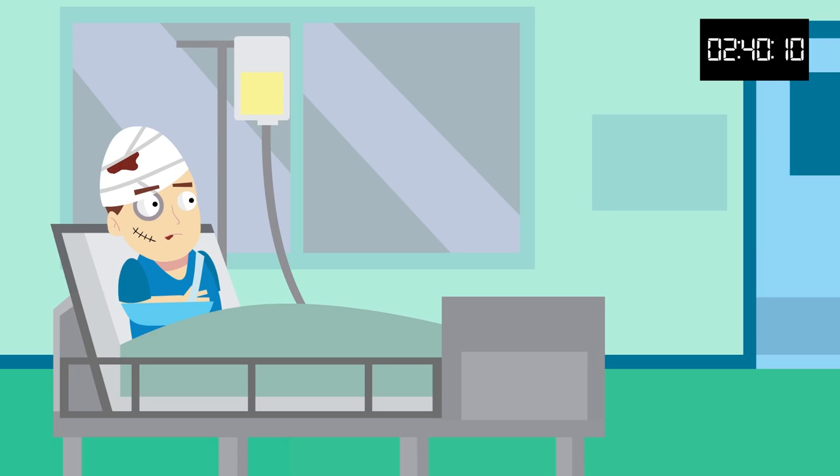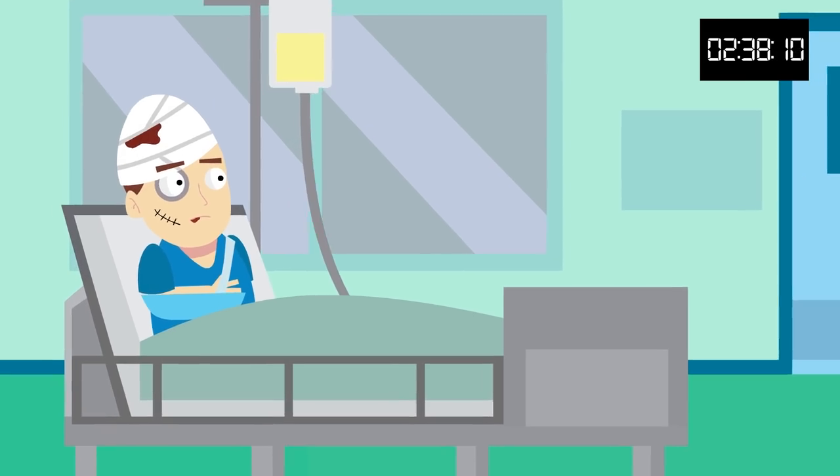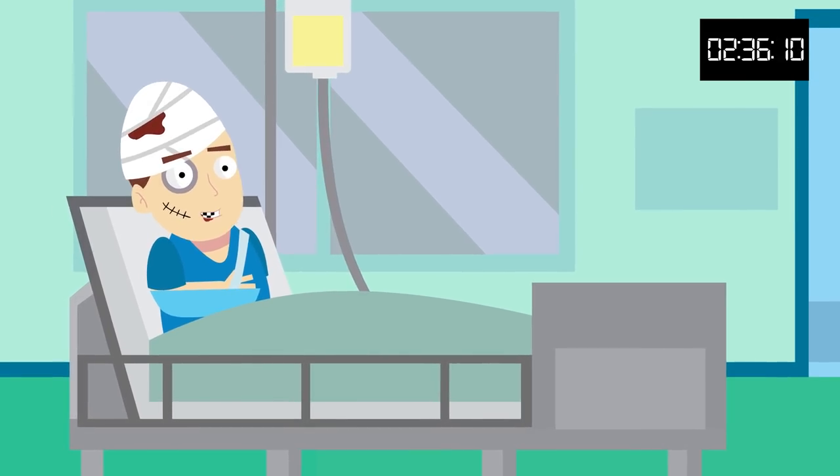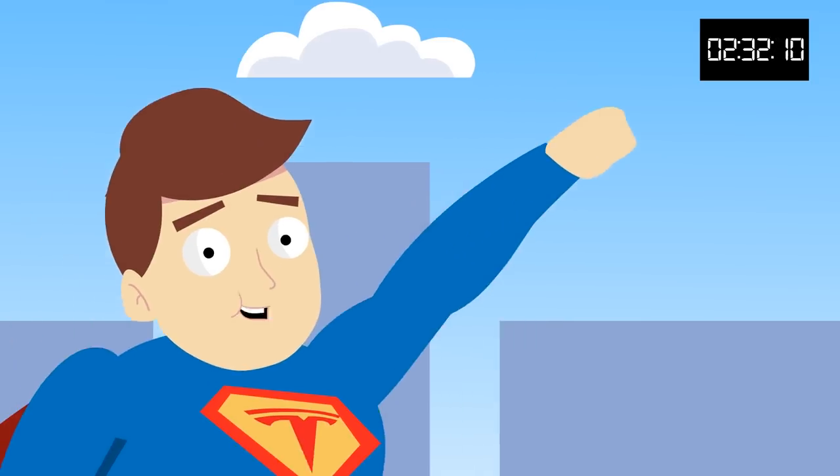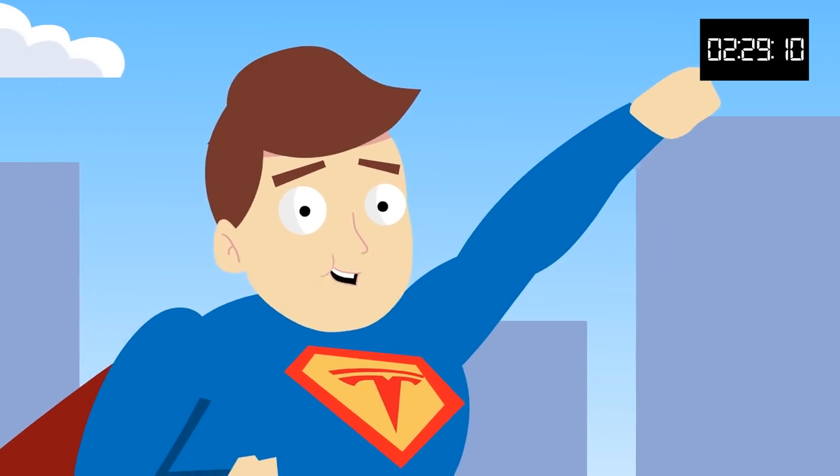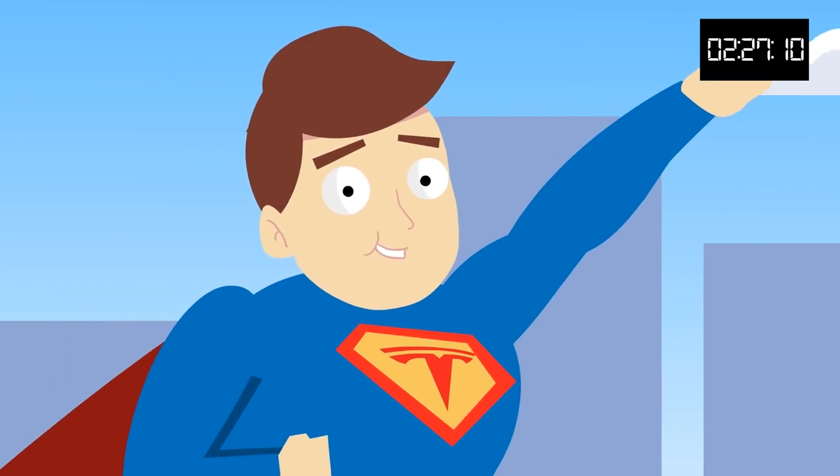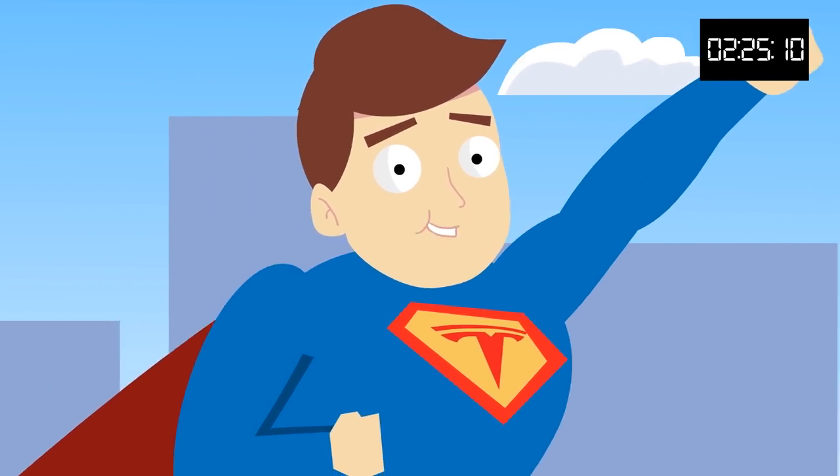Musk was a victim of severe bullying, including an incident that landed him in the hospital after being thrown down a flight of stairs. Despite this, Elon has said he believes his purpose in life is to try to take a set of actions that are likely to prolong civilization, minimize the probability of a dark age, and reduce the length of a dark age if there is one.